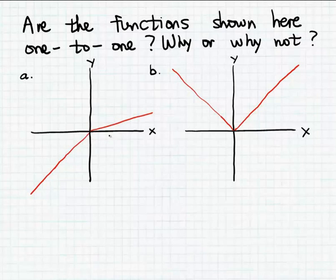For instance, if we look at the function graphed in example a, if you imagine any horizontal line drawn here on this same set of axes, notice that it's only going to intersect this function in at most one point. And so the function a is one-to-one, or the function graphed here in example a is one-to-one.